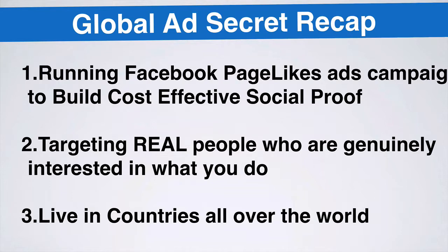Let's do a quick recap of the global ad secret. Number one: running a Facebook page likes ad campaign to build cost-effective social proof. Number two: targeting real people who are genuinely interested in what it is that you do. Number three: live in countries all over the world. A lot of times people say to me, 'I'm a chiropractor and I can only work with people who live in my zip code — why would I want people in Canada and Australia and the UK to like my page?' Well, if your page only has seven likes and another chiropractor's page has 7,000, people are going to automatically assume that other chiropractor is better just because they have more likes. So this gets real people who are genuinely interested in chiropractic work to like your page — that is very positive.